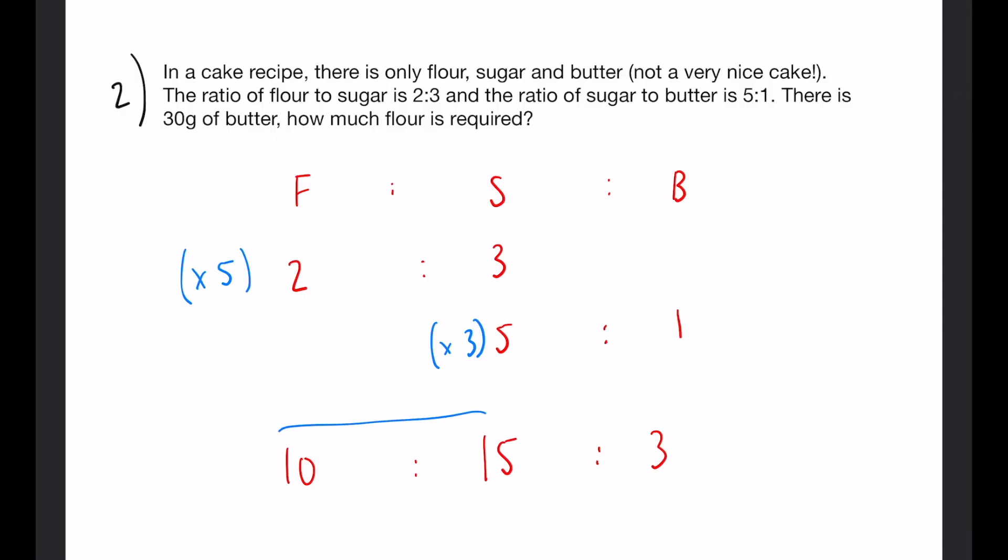And again, this is our final ratio. So now we just have to sub in the numbers and see what we get. So we are told there is 30 grams of butter and that is split between 3 units of the ratio. So that means 1 unit is going to equal 10 grams because 30 divided by 3.